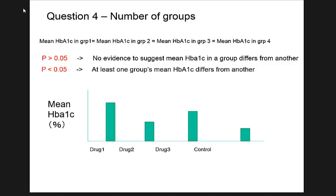Once ANOVA finds there are differences, you can go back to do pairwise comparisons. There is controversy: some people don't adjust post-hoc because ANOVA already tested for overall difference; others do Bonferroni adjustment anyway. But if you do Bonferroni, you inflate p-values — in which case there's no need for ANOVA. The beauty of ANOVA is it may let you avoid correcting your p-values afterward.